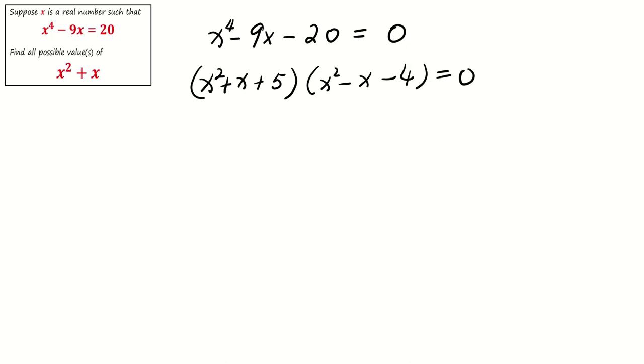Now, if x^4 - 9x - 20 = 0, then it's either x^2 + x + 5 = 0 or x^2 - x - 4 = 0. We have already determined that x^2 + x + 5 = 0 has no real solution. So, the real solutions must come from x^2 - x - 4 = 0.